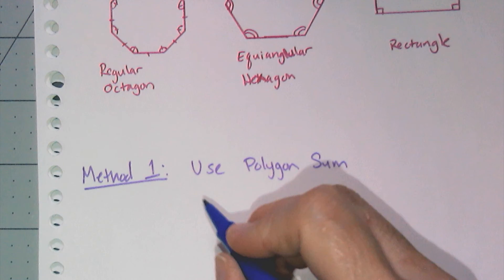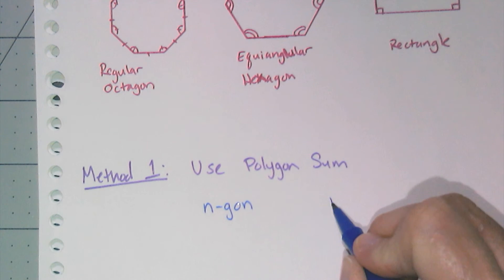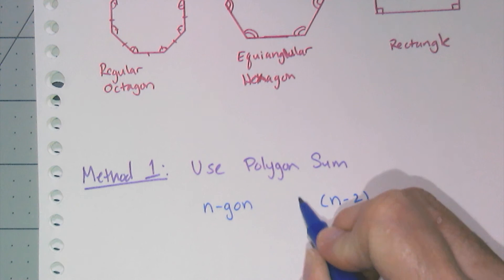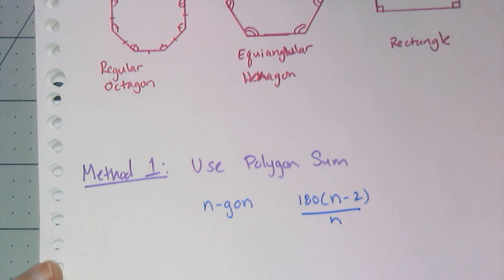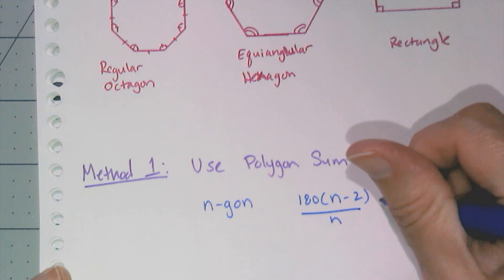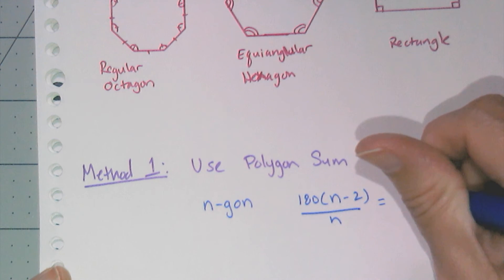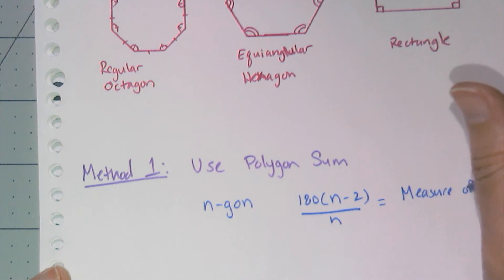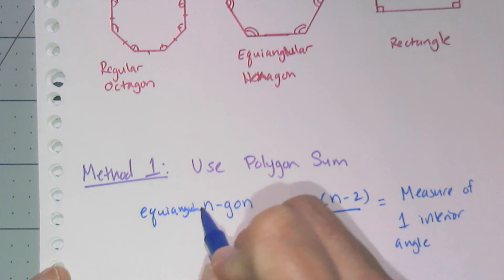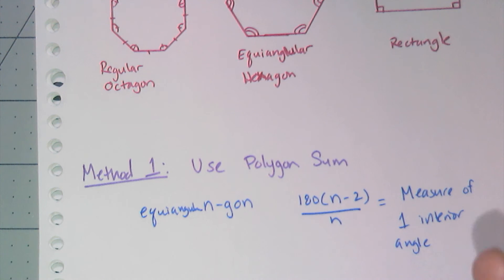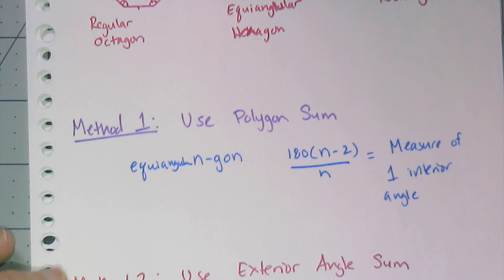We use the polygon sum. If I have an N-gon, I know the sum of its interior angles is 180(N-2). And I can simply divide by the number of sides, and that is equal to the measure of one interior angle. And so remember, this has to be an equiangular N-gon. Not any N-gon, just all the angles are equal, which, you know, makes sense.